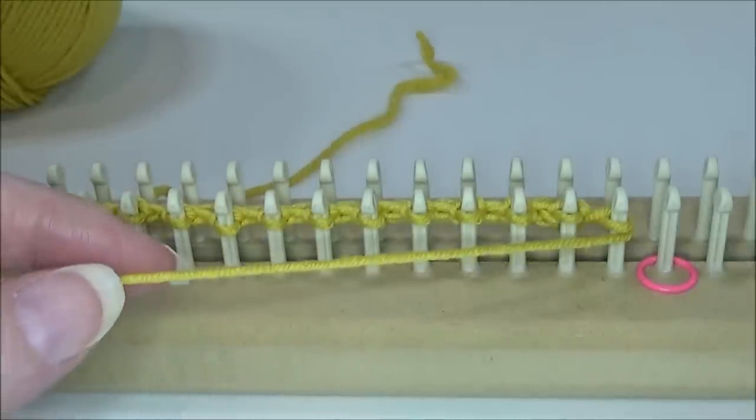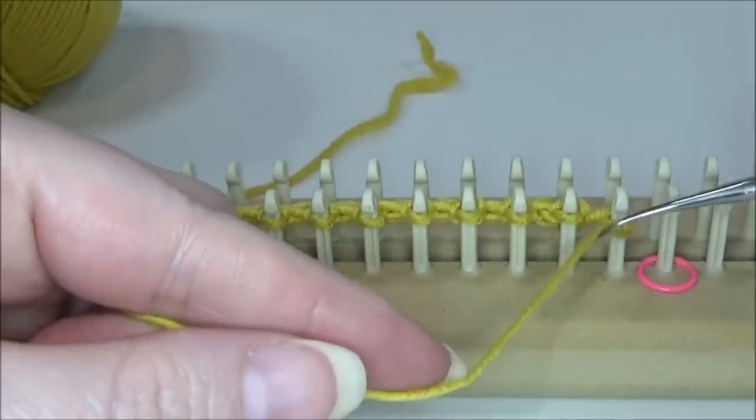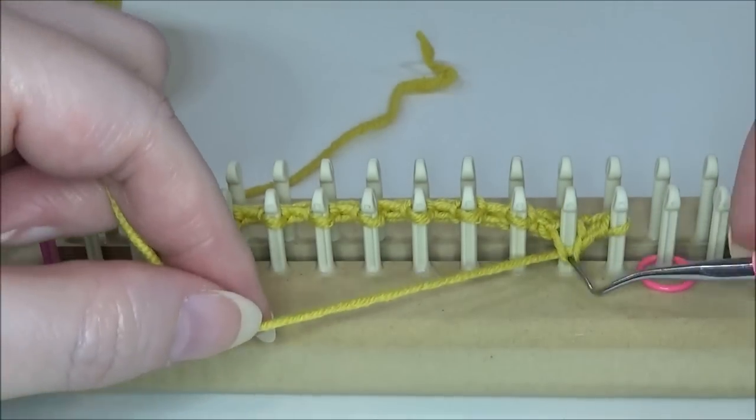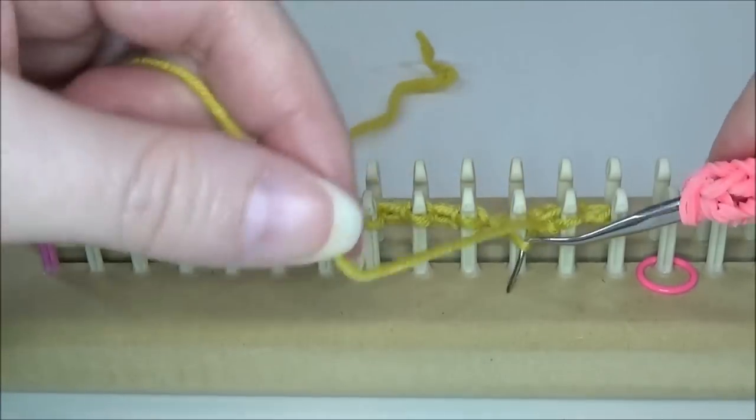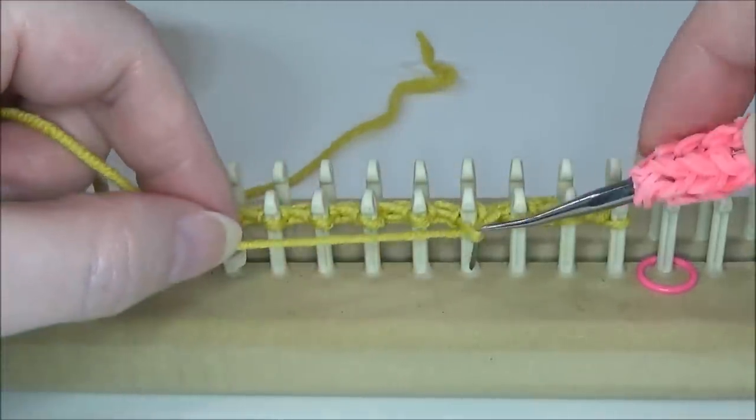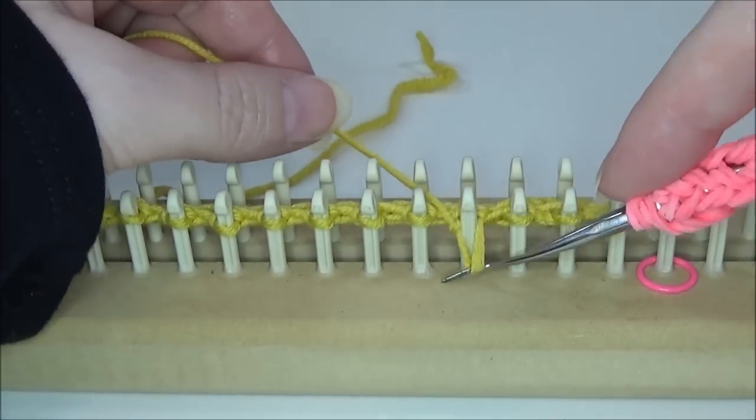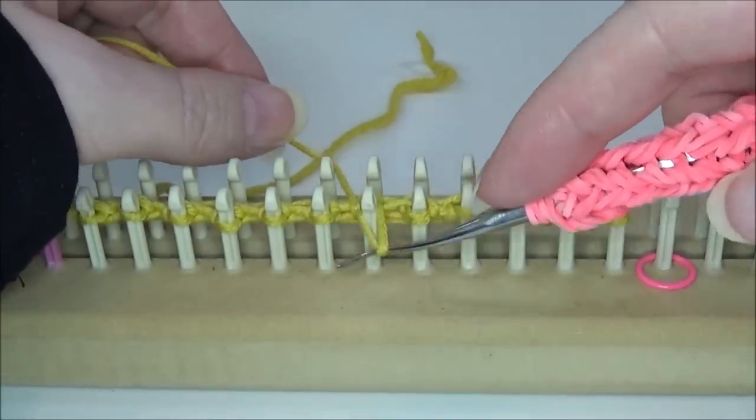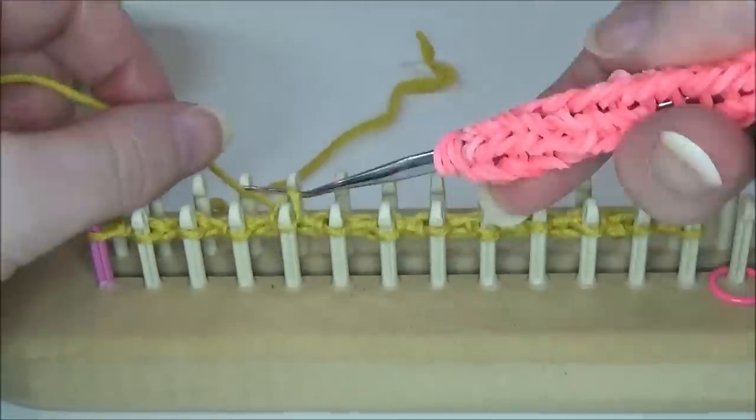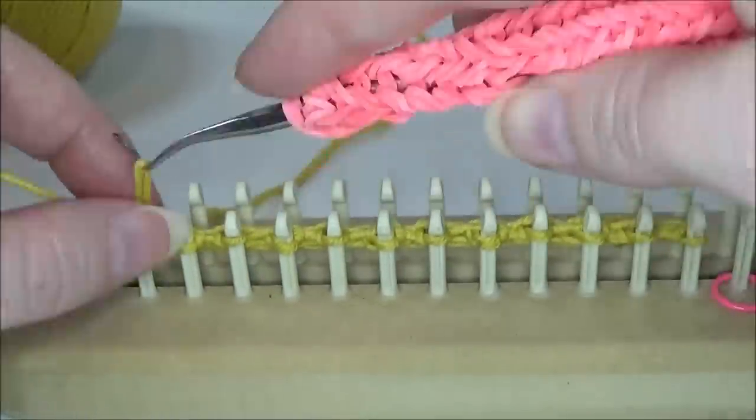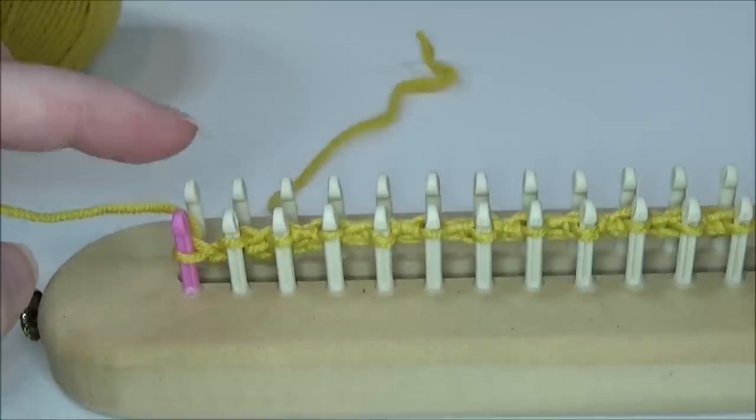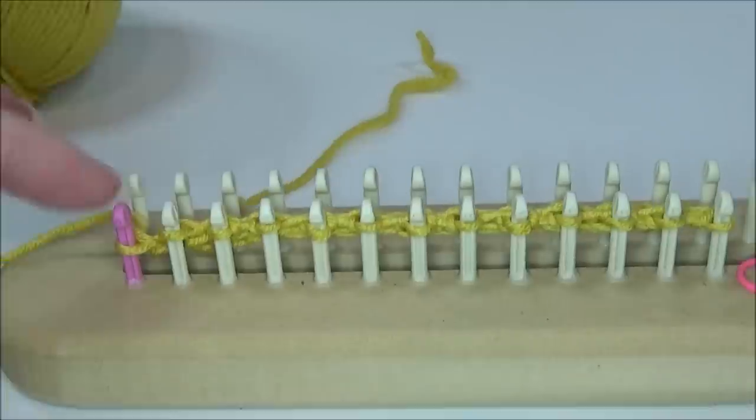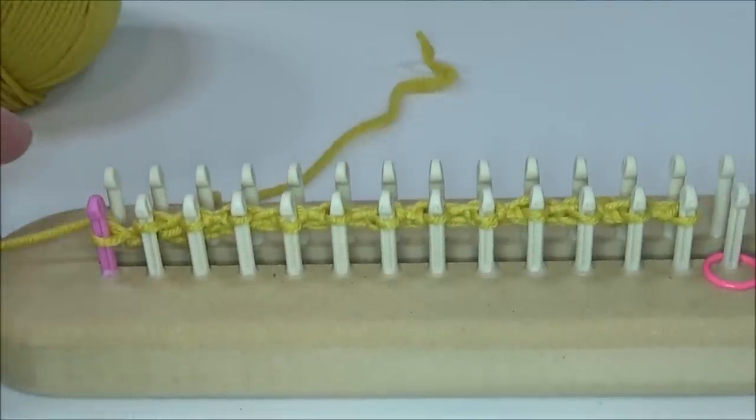The other option is to do a seed stitch texture. What that's going to be is you would knit one, purl one, knit one, purl one all the way to the end. For the next row, you would do the exact opposite. For every peg that you knit you would purl, and every peg that you purled you would knit. This is a two row repeat for the seed stitch, which is also very simple and quick and easy.